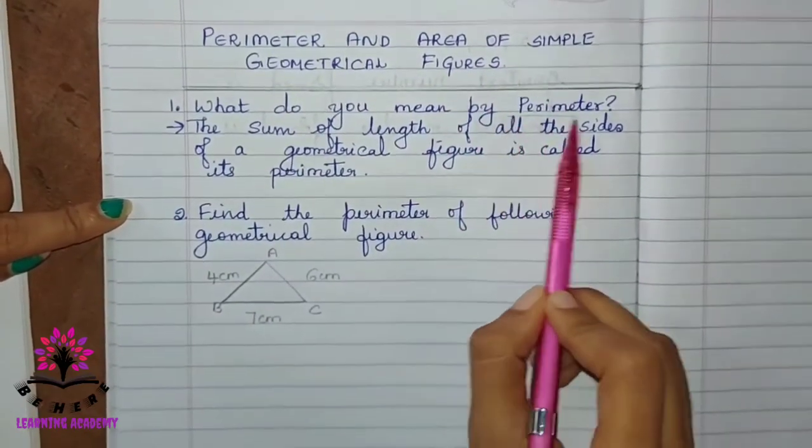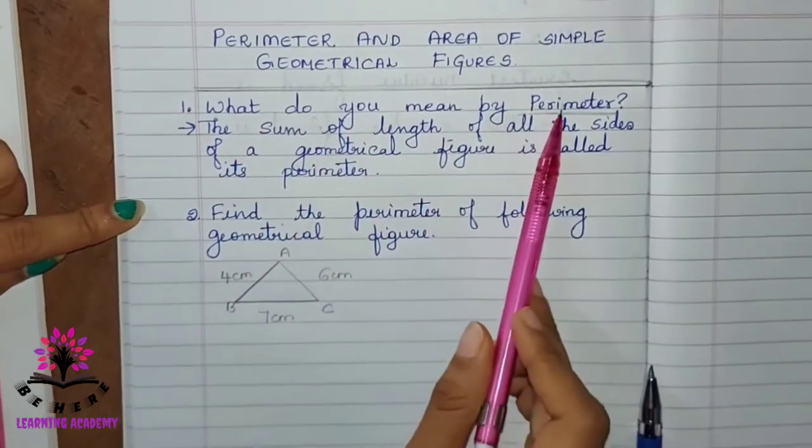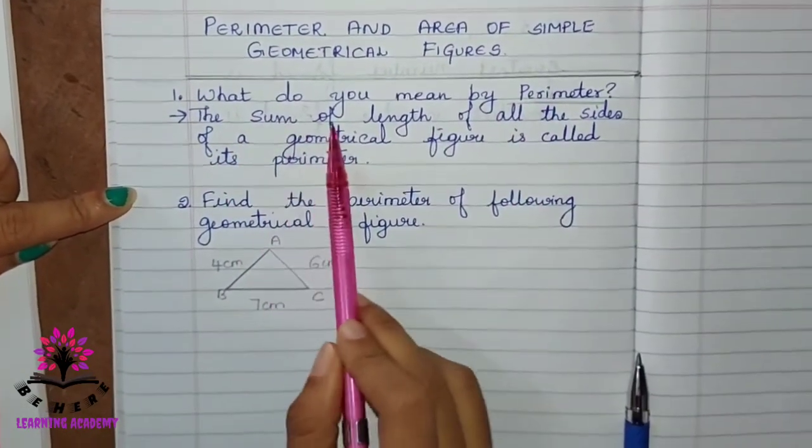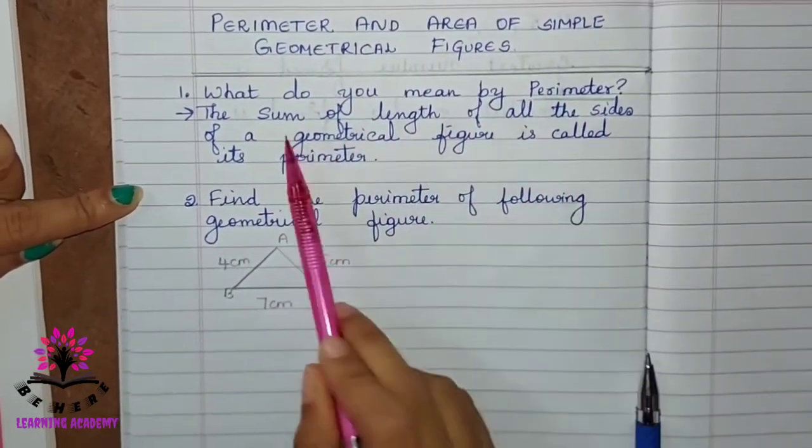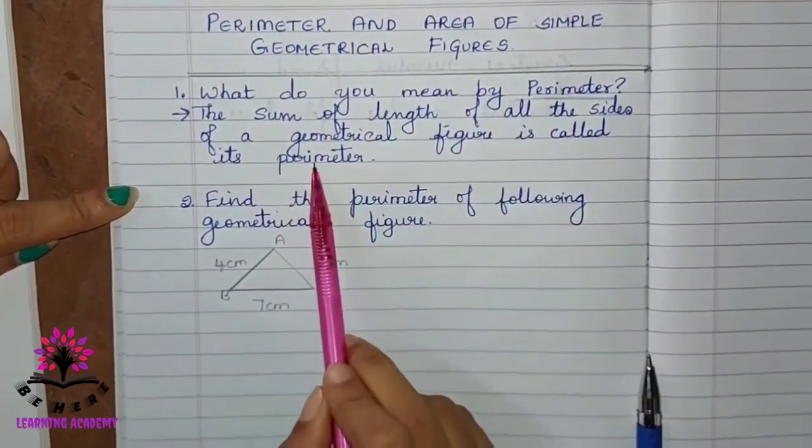First, let us study the meaning of perimeter. What do you mean by perimeter? The sum of length of all the sides of a geometrical figure is called as its perimeter.